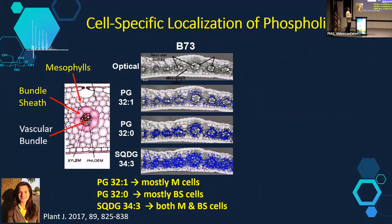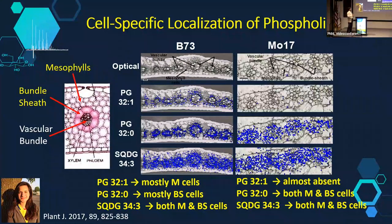We can do cell-specific localization. In maize leaf for B73, comparing PG 34:1 and PG 34:0 — there's only one double-bond difference — but PG 34:0 is mostly in bundle sheath cells while PG 34:1 is mostly mesophyll. If you look at different genotypes like Mo17, they are deficient in PG 34:1 and PG 34:0 is mostly homogeneous. That's the kind of thing mass spec imaging can tell you.